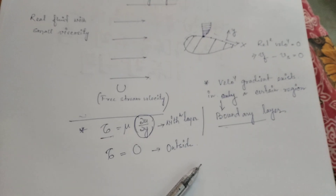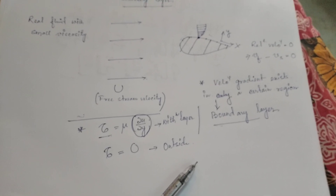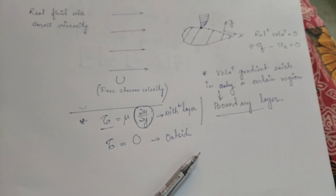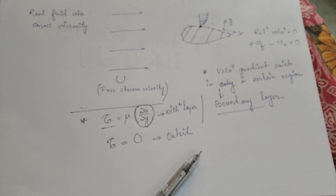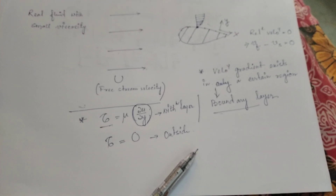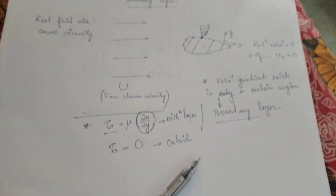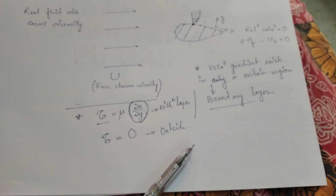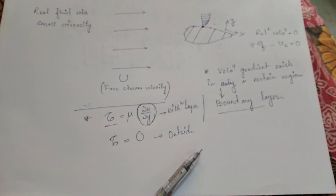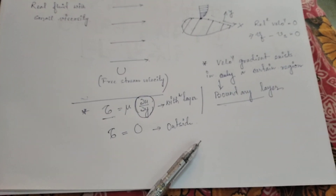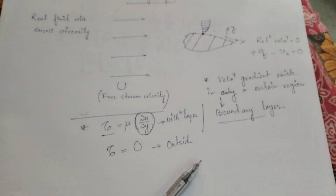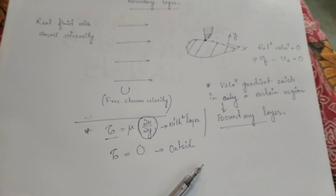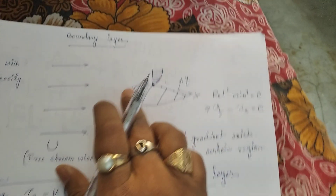This boundary layer theory is responsible for soil erosion. We generally say water is an ideal fluid, but water has a small amount of viscosity, which creates a boundary layer. Basically, the boundary layer forms when a fluid flows past a surface: within that layer there exists a velocity gradient because at the surface the velocity is zero and as you move upward the velocity increases. This increment is seen only in a particular region — that region is called the boundary layer. Beyond that region there is no velocity gradient and no shear stress.